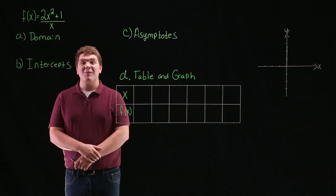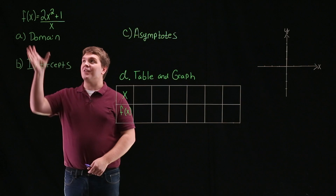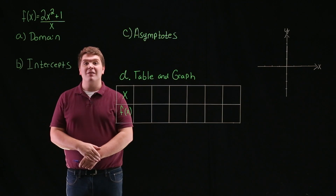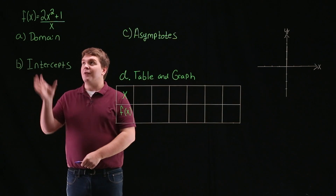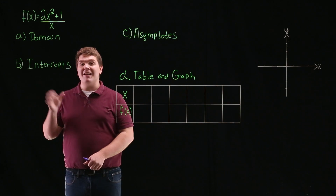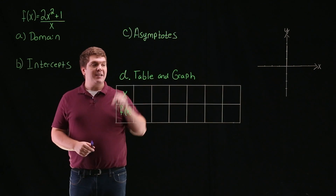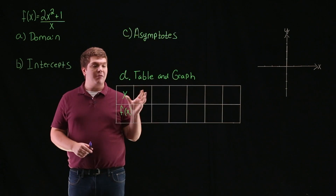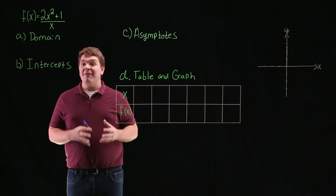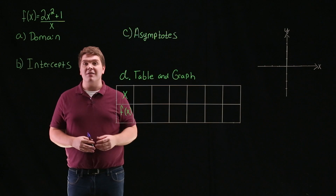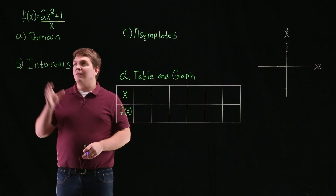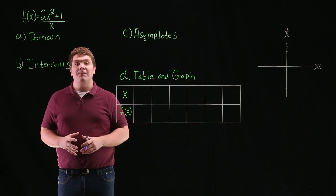Hello, my name is Gabe. For this problem, we're asked to sketch the graph of the function f of x equals 2x squared plus 1 divided by x, by stating the domain of the function, finding any intercepts, finding any asymptotes, and then creating a table to find a couple more points on the graph, and finally using all of this information to sketch the graph of f. So let's begin by discussing the domain of f.